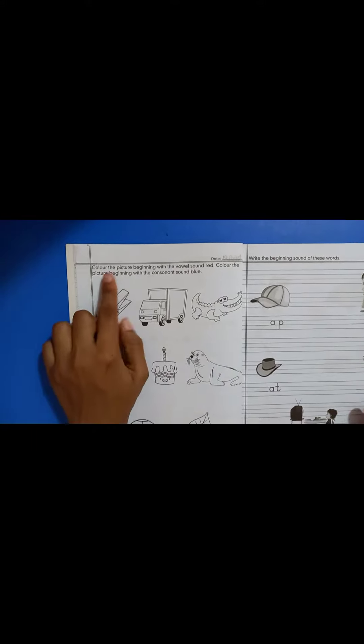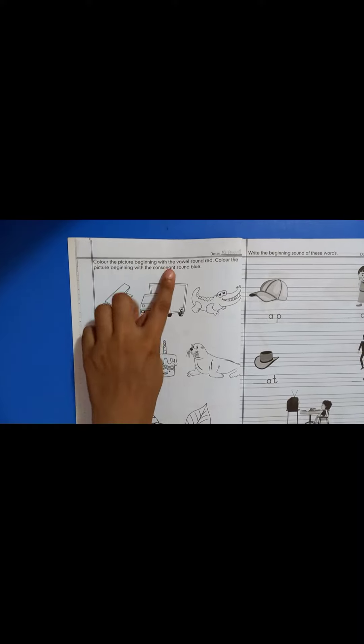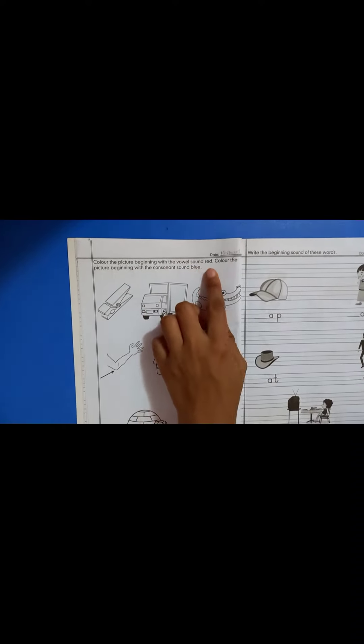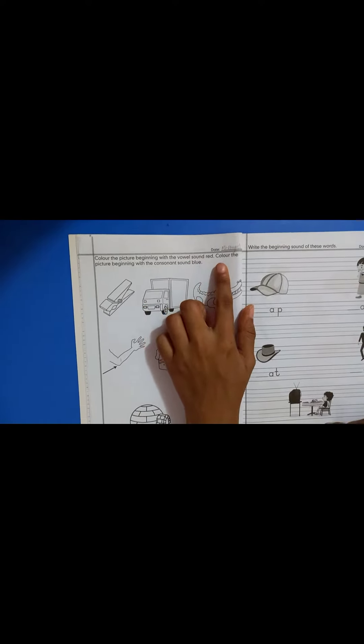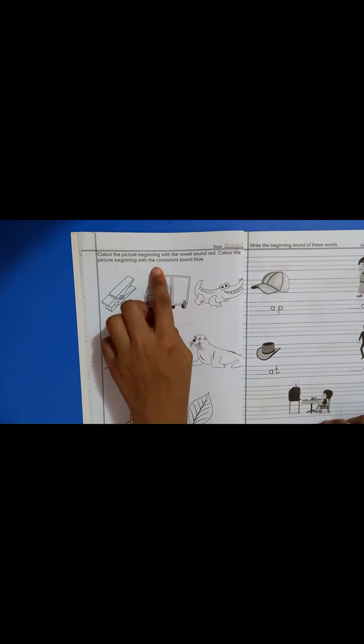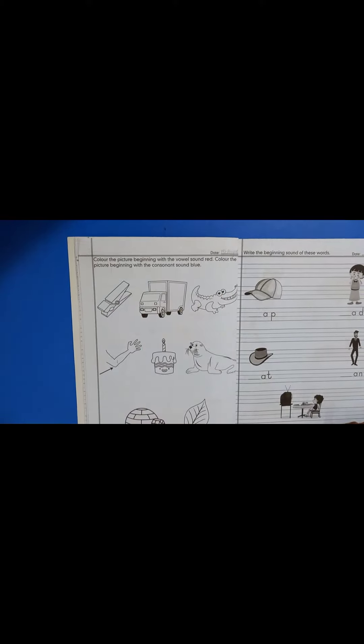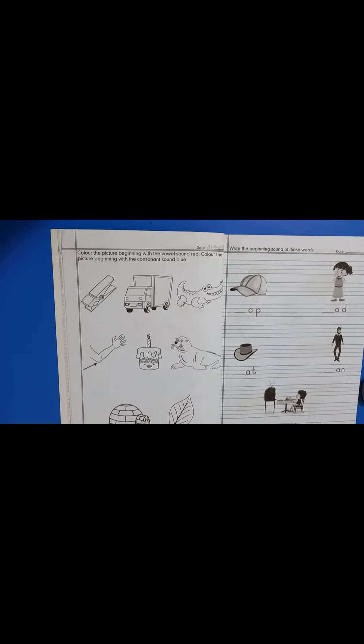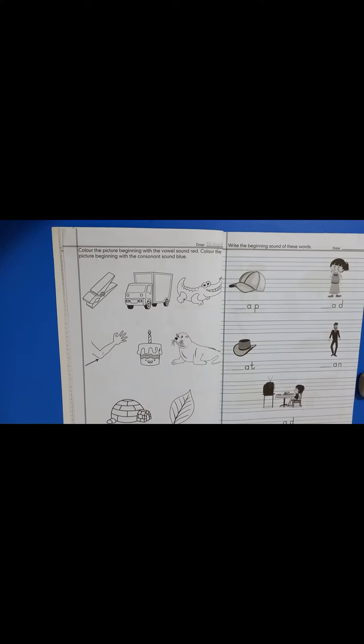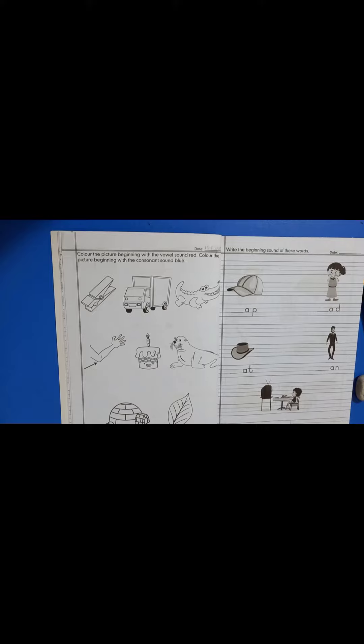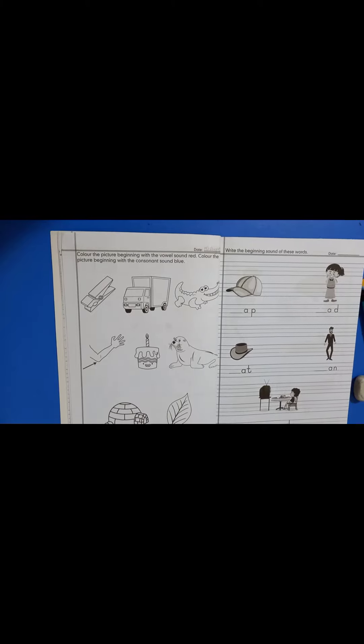Let's read the question. Color the picture beginning with the vowels sound red. Color the picture beginning with the consonant sound blue. The pictures that are starting from vowels you have to color it red, and the pictures that are starting with consonants you have to color blue.